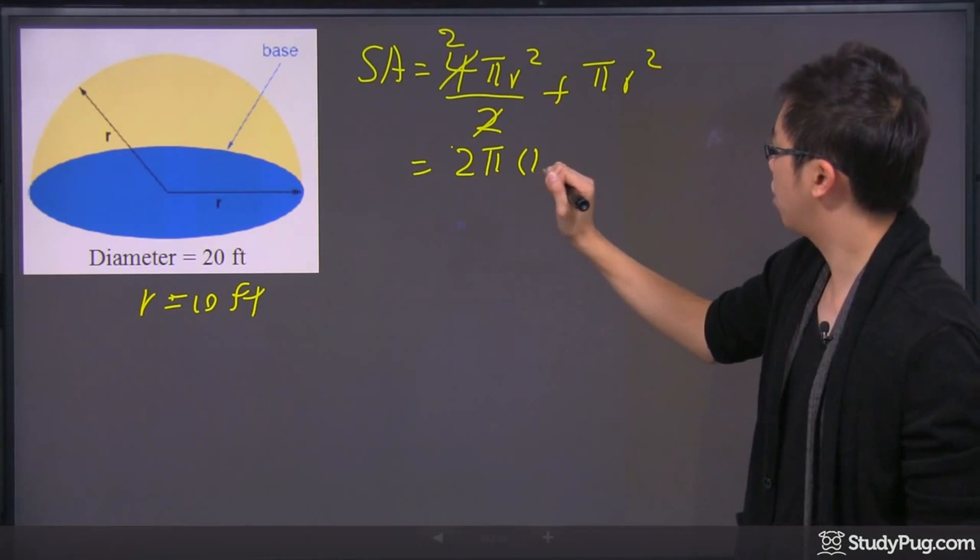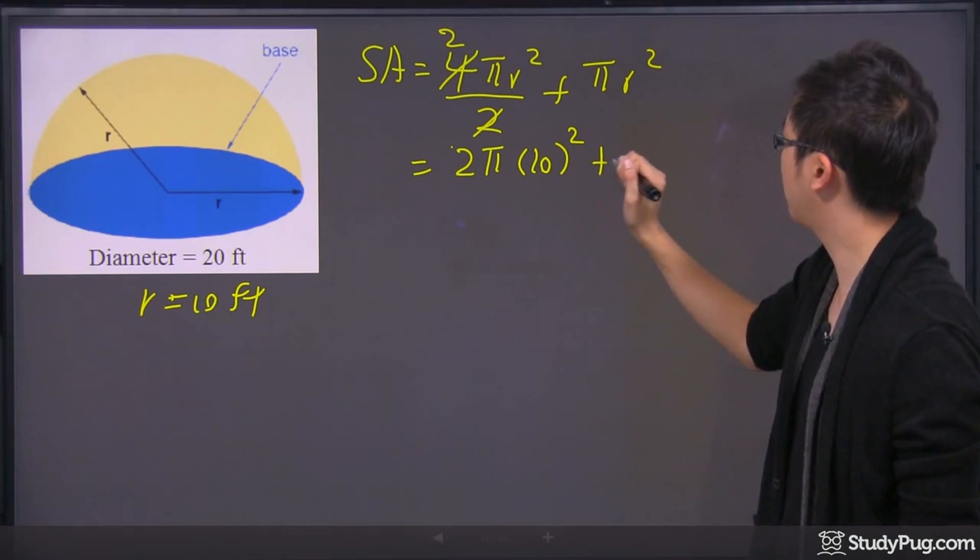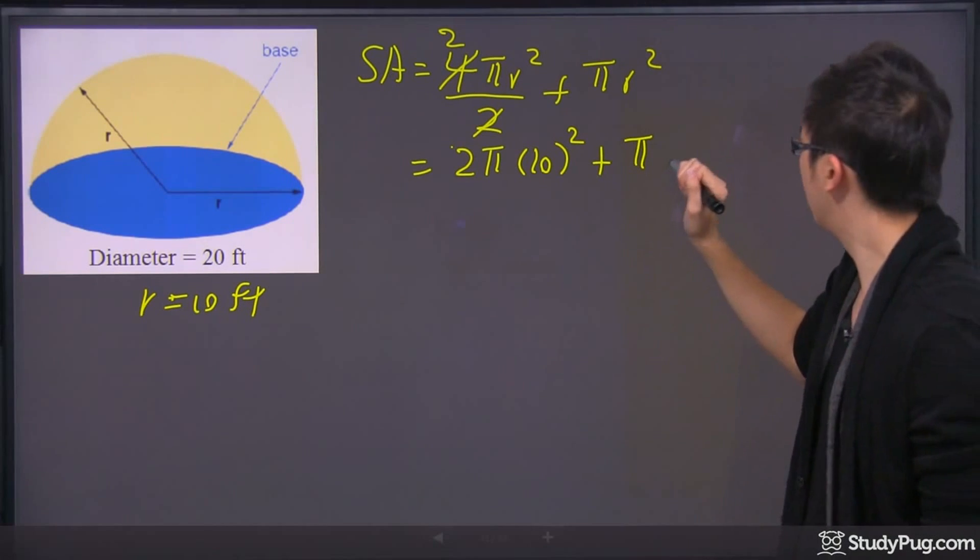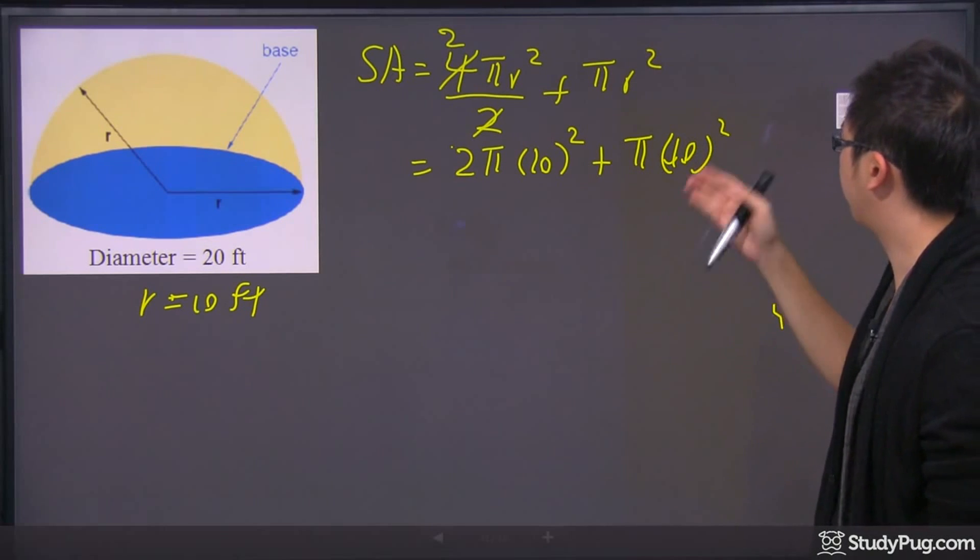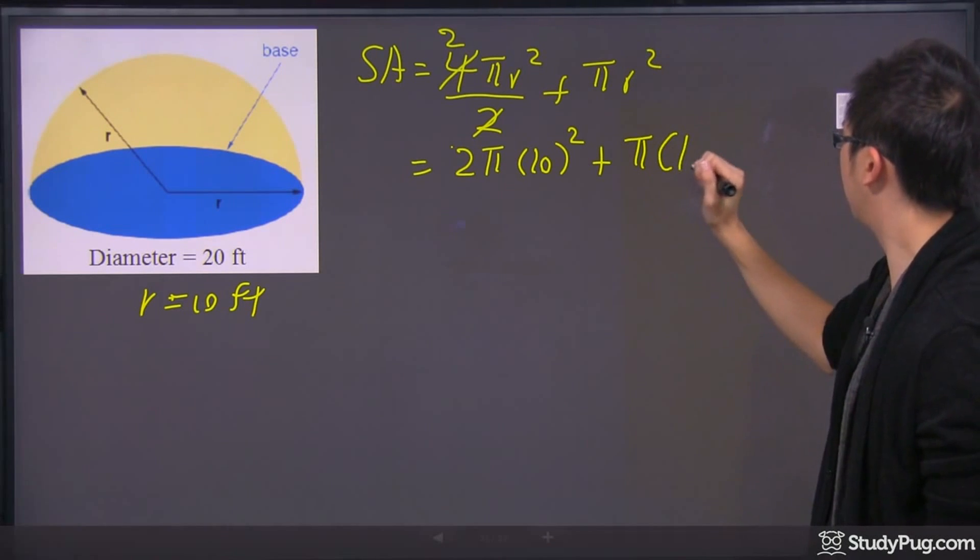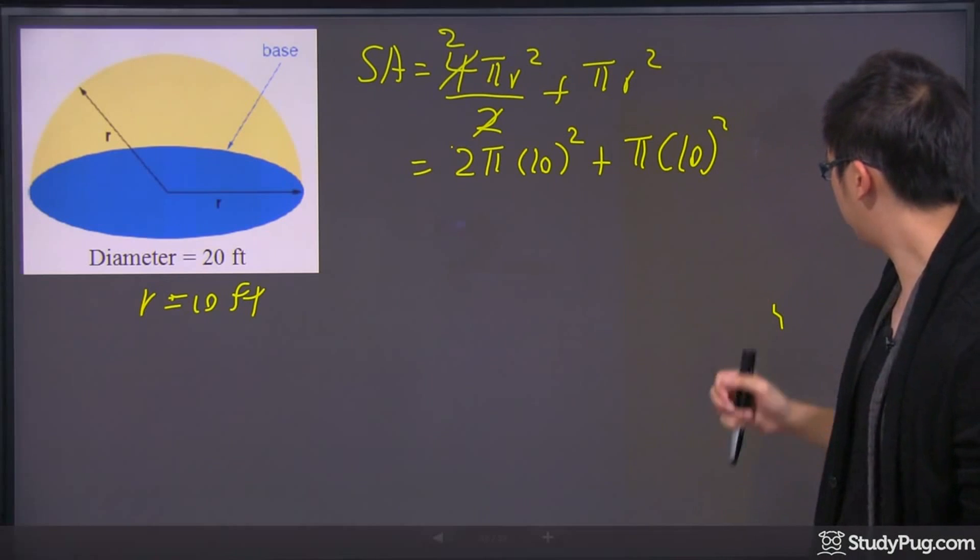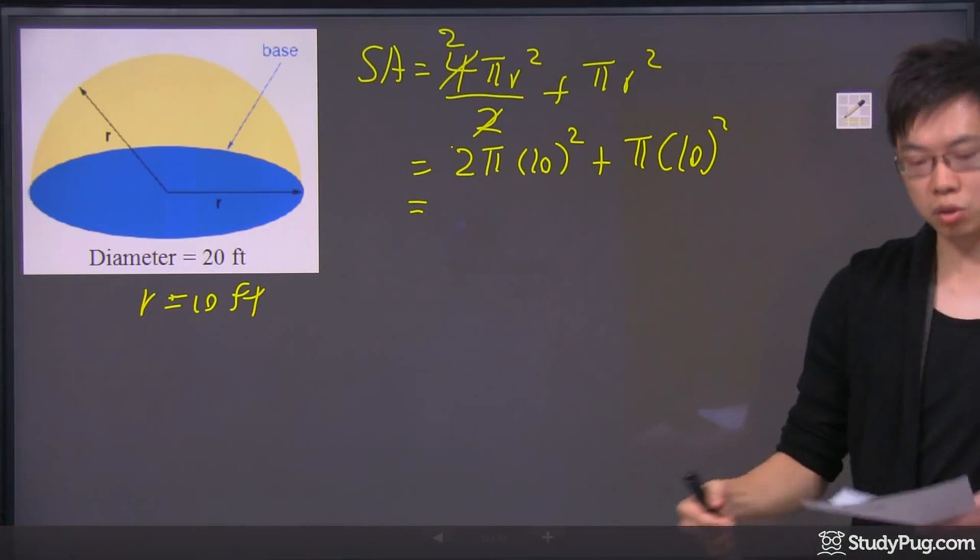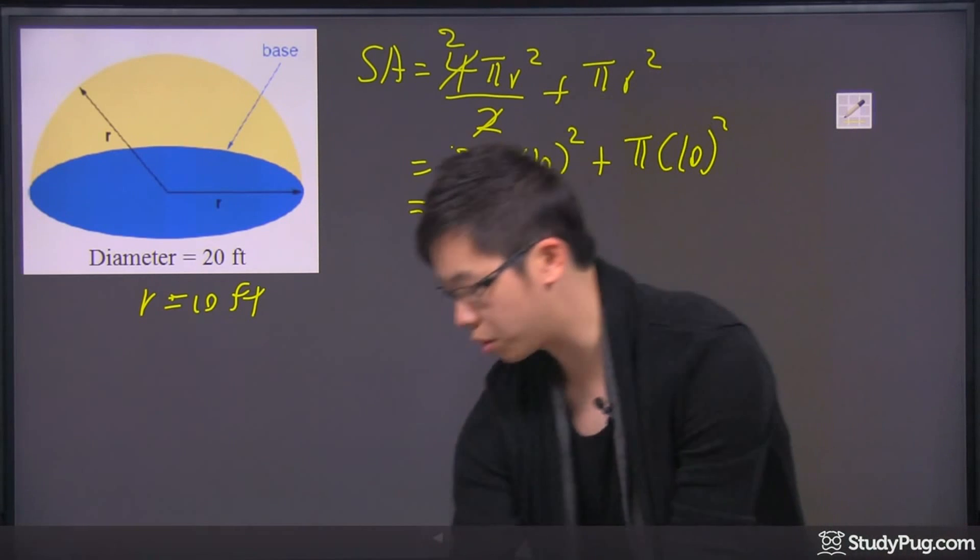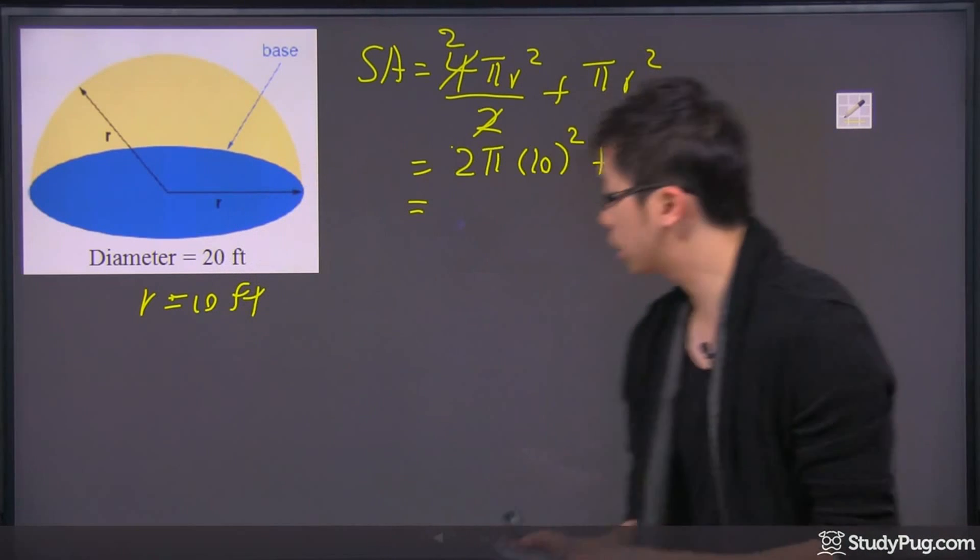So we're just going to put in 10 right here, put a square sign on the top, and plus πr². π times the 10, and I'm going to square that. A little bit of a weird thing shows up. So here we go. If you punch in your calculator, it should give you a good number. So let me do that quickly right here.